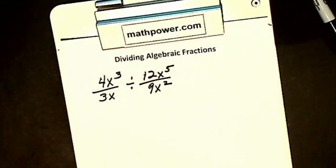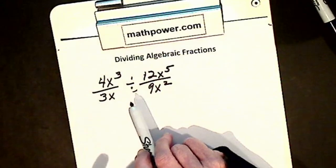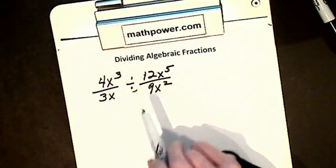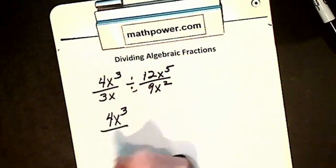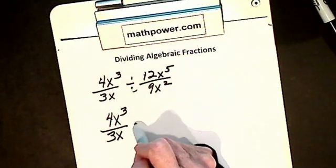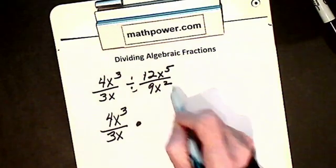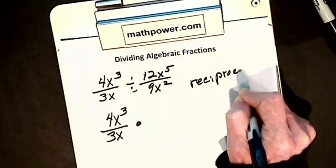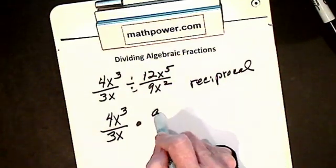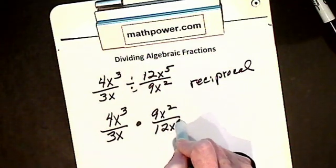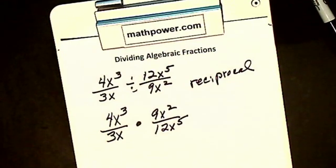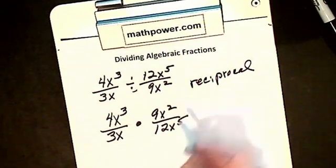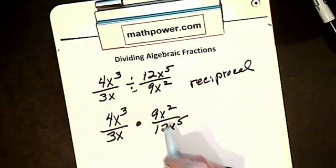Now we're going to divide algebraic fractions. It's very similar to multiplication, except for one thing: I cannot cancel across a division sign. So what I want to do is change the division to multiplication. My 4x cubed stays over 3x. When I change this division to a times, I have to invert — take the reciprocal of — the fraction to the right. I flip the right one, not the wrong one. So now I get 9x squared divided by 12x to the 5th.